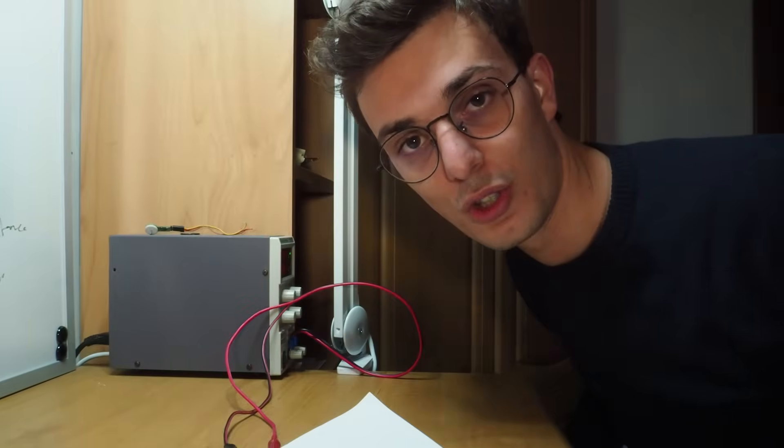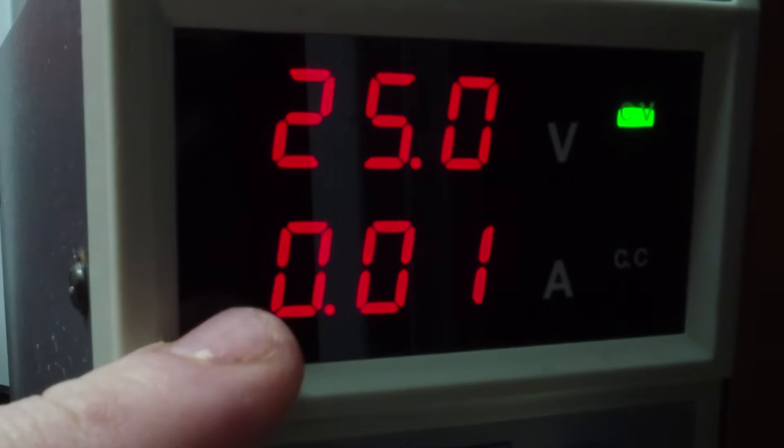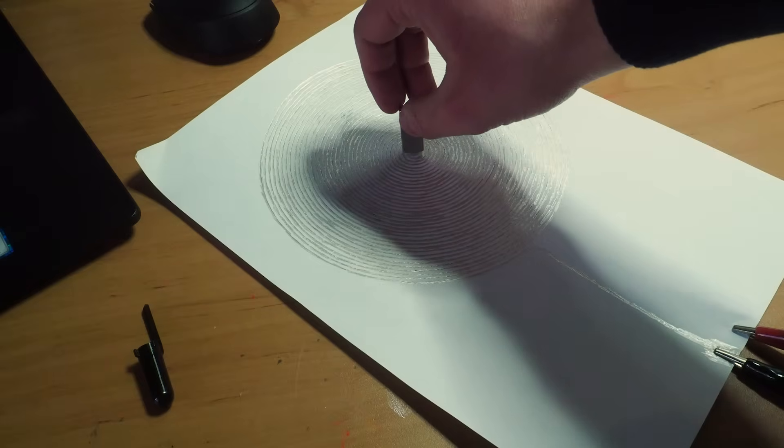Although current is passing through the windings, the resistance of the coil is limiting it to around 10 milliamps, which is not large enough to create a strong magnetic field and be affected by a magnet.